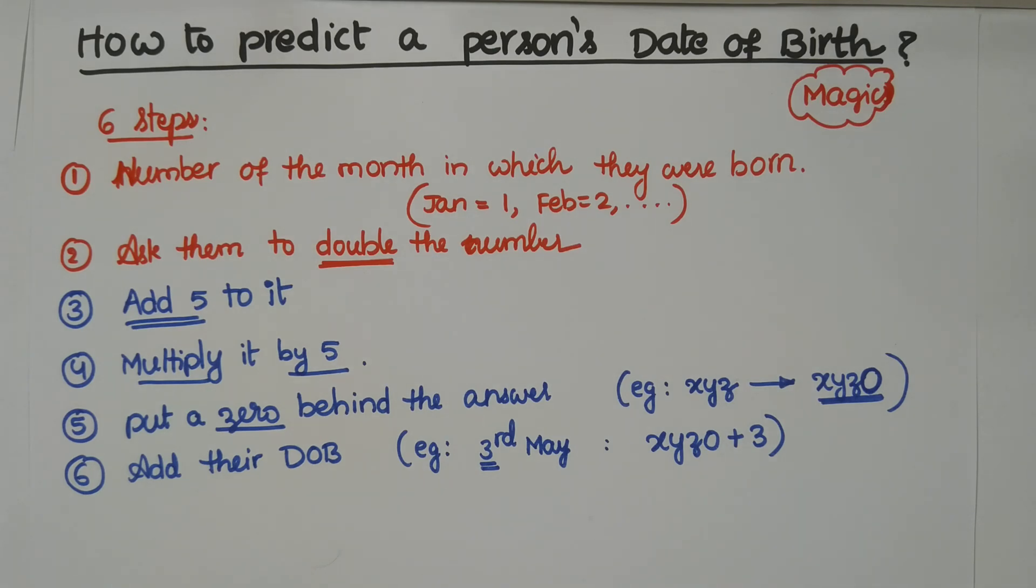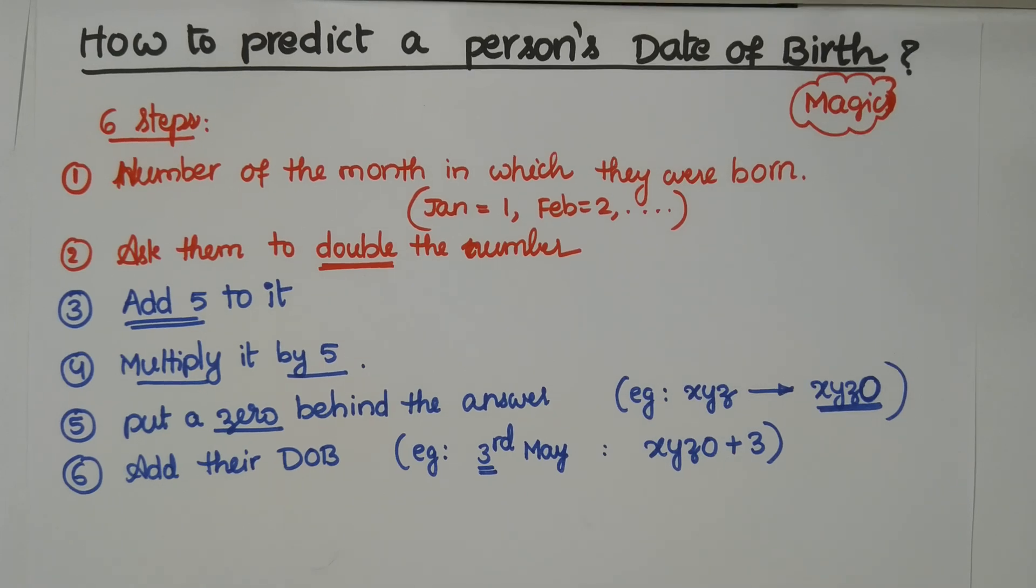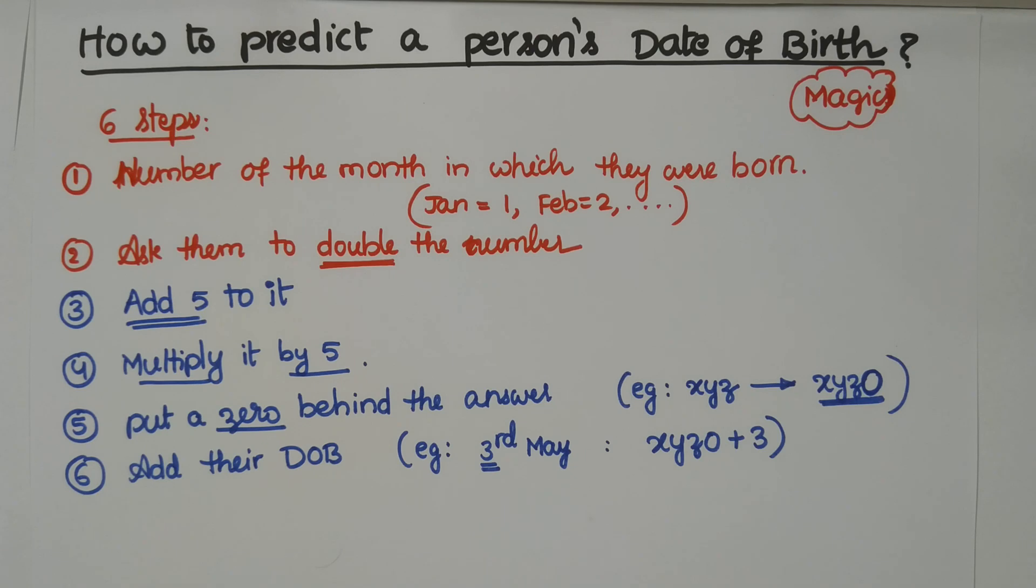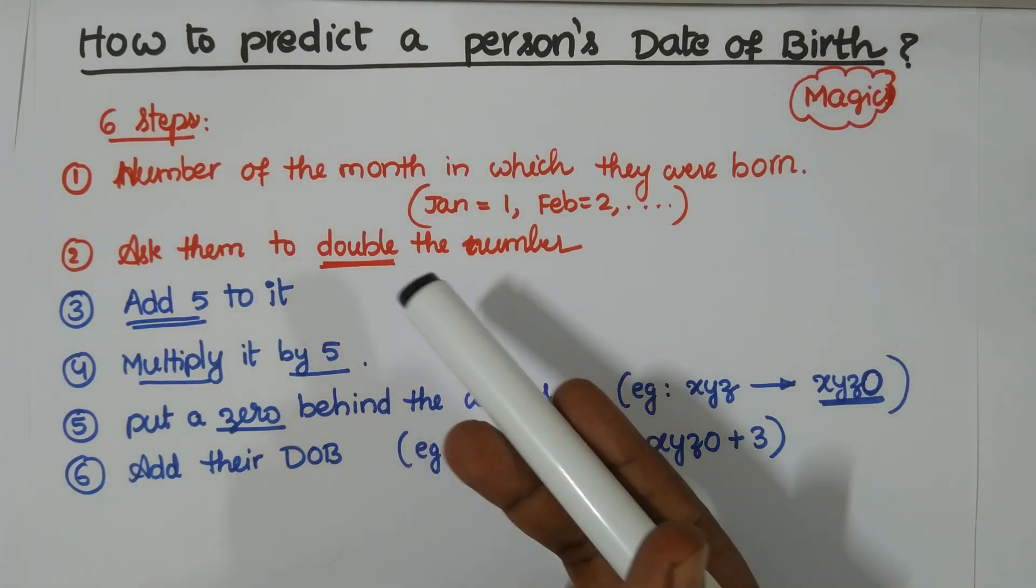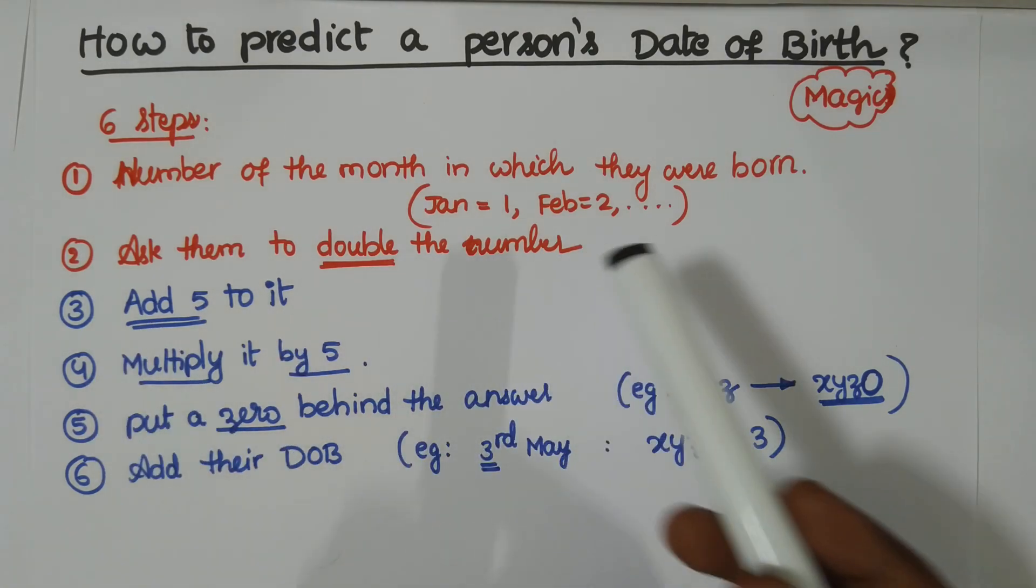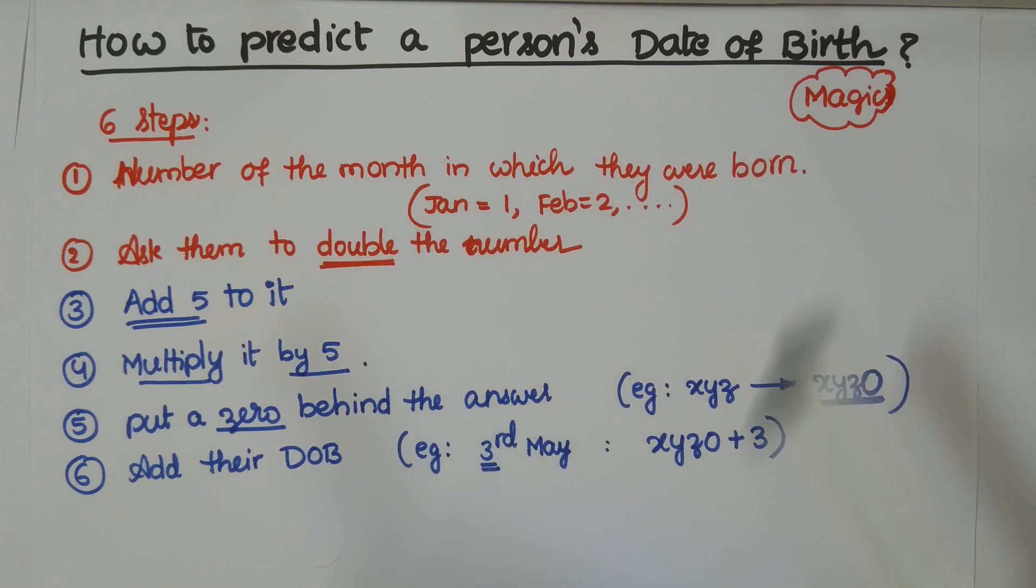Right after this lecture, you can try with your friends, your family members, whoever you want. Just play with mathematics. Slowly or eventually things will work out. You have to ask them to double the number. And step number three is you have to add five to it. Step number four is multiply this by five. Step number five is put a zero behind the answer.